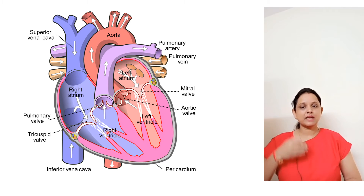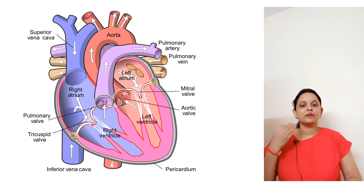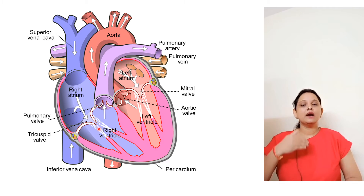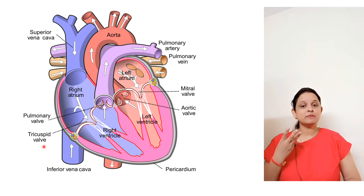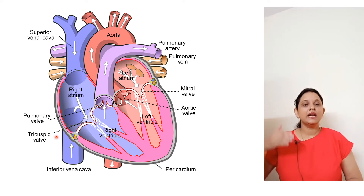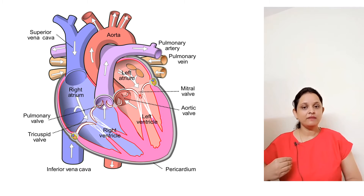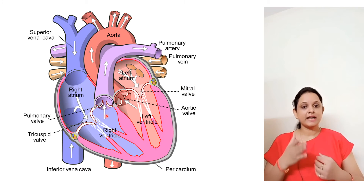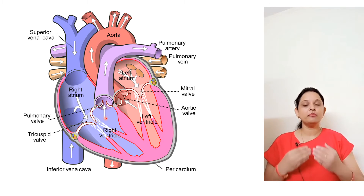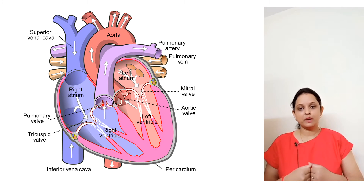In the atrio-ventricular septum there is an opening or valve to connect the atria and ventricle of the same side. The valve between the right atria and right ventricle is called the tricuspid valve because it has three muscular flaps. The valve between the left atria and left ventricle is called the bicuspid valve. These valves prevent the backward flow of blood, allowing flow in one direction only.